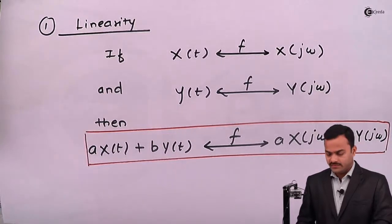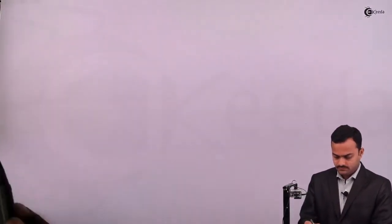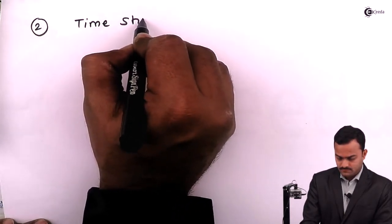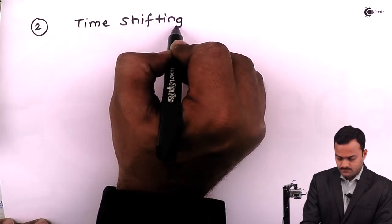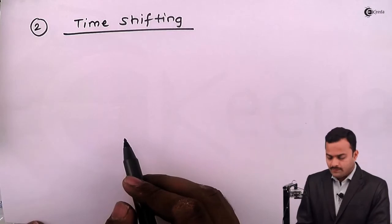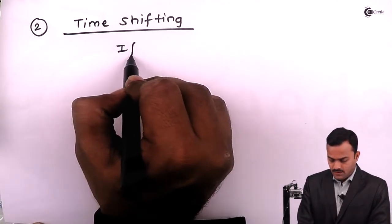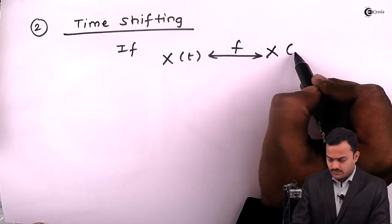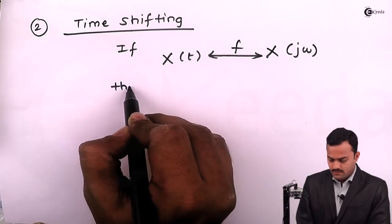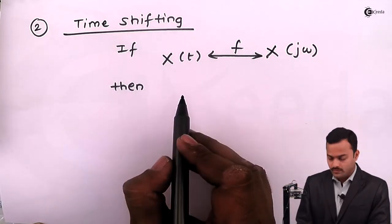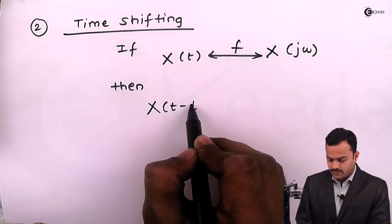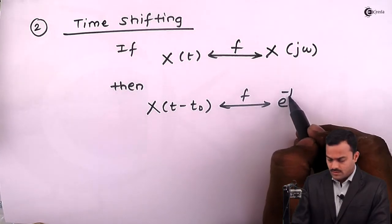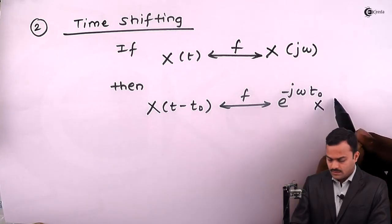Let's go to the next property, which is time shifting. What the time shifting property says: if x(t) has a Fourier transform X(jω), then if you shift this signal by t₀, so it becomes x(t − t₀), the Fourier transform is e raised to minus jωt₀ multiplied by X(jω).